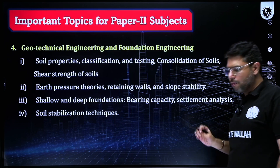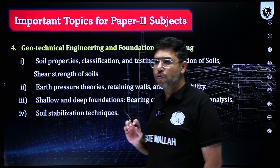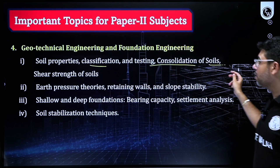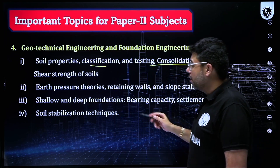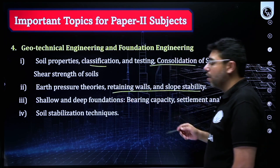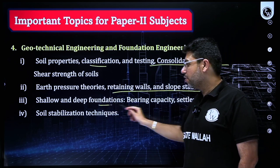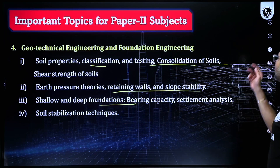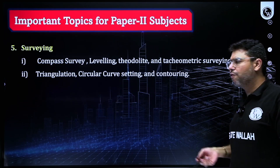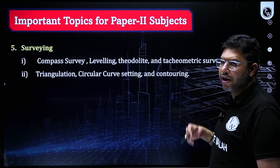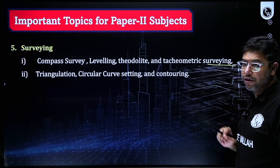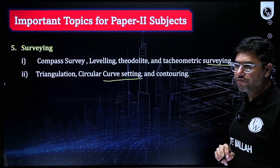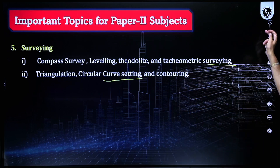Geotechnical engineering is one of the most important parts of Paper 2. Focus on soil properties including the soil-water relationship, classification and testing, consolidation (very important), and shear strength of soil. Also cover earth pressure theory, retaining walls, slope stability, and shallow and deep foundations — mostly questions come from these parts — plus soil stabilization techniques. For surveying, focus on compass survey, leveling, theodolite and tacheometric survey, triangulation, circular curve setting, and contouring.